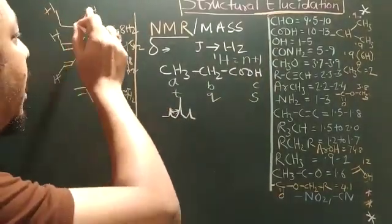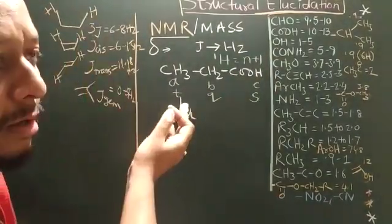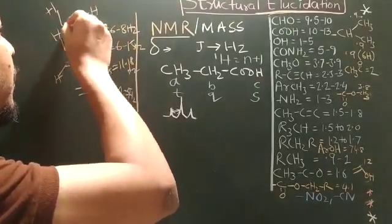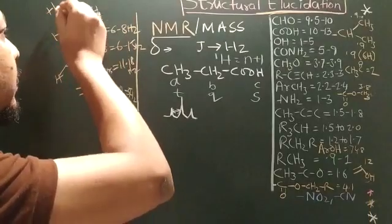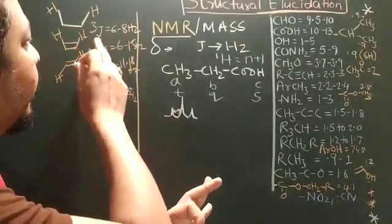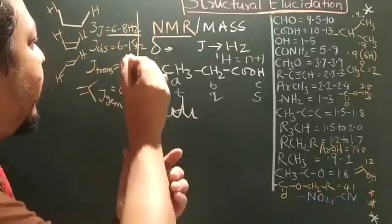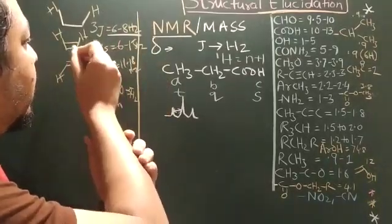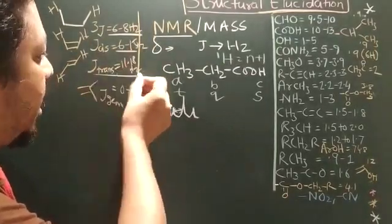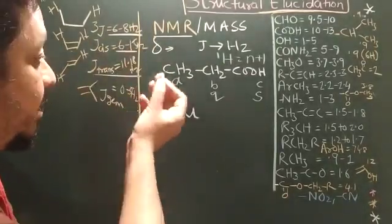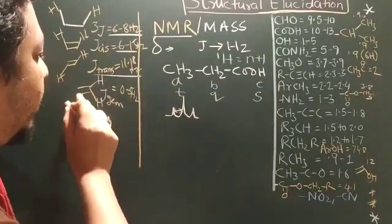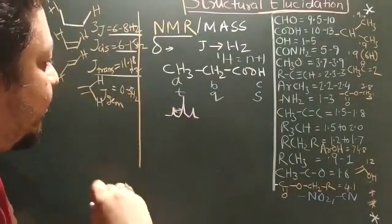Suppose you have a hydrogen which is original hydrogen. Then the J value, the coupling is through 3 bond. That is why it is 3J coupling or vicinal coupling, which is 6 to 8 Hertz. J cis, the hydrogen which is double bond, it is 6 to 15 Hertz. J trans is higher 11 to 18 Hertz. And the J geminal where the hydrogen and the same carbon of double bond is only 0 to 5 Hertz.